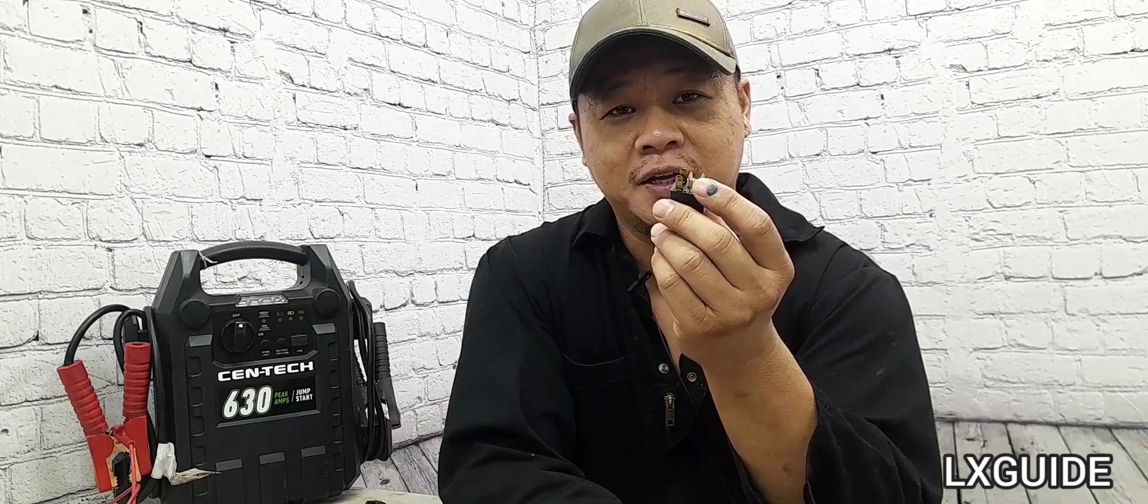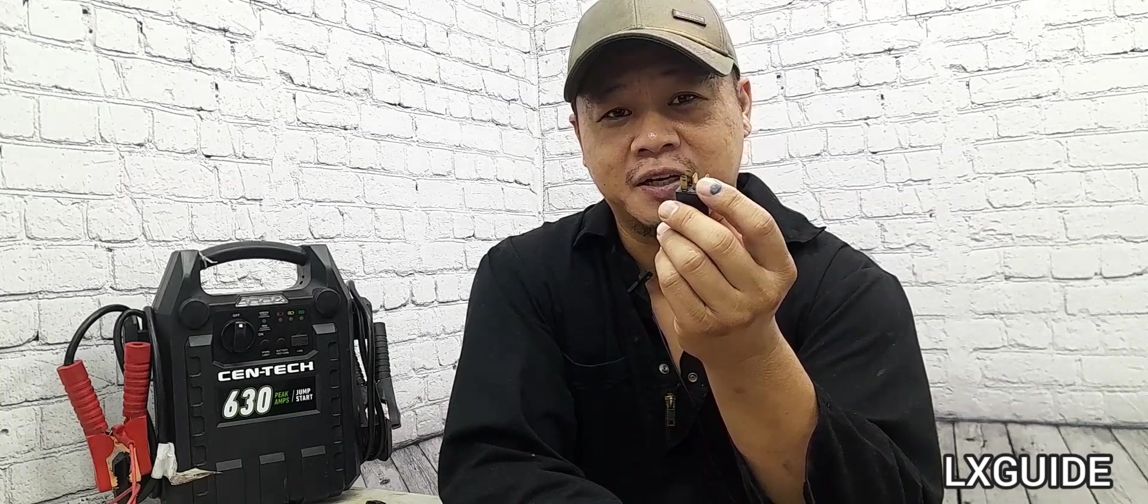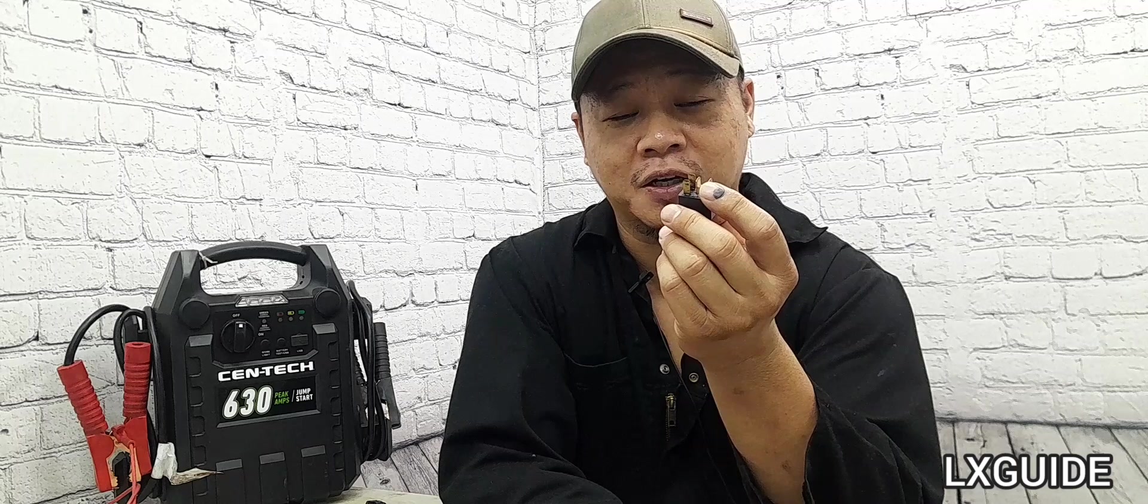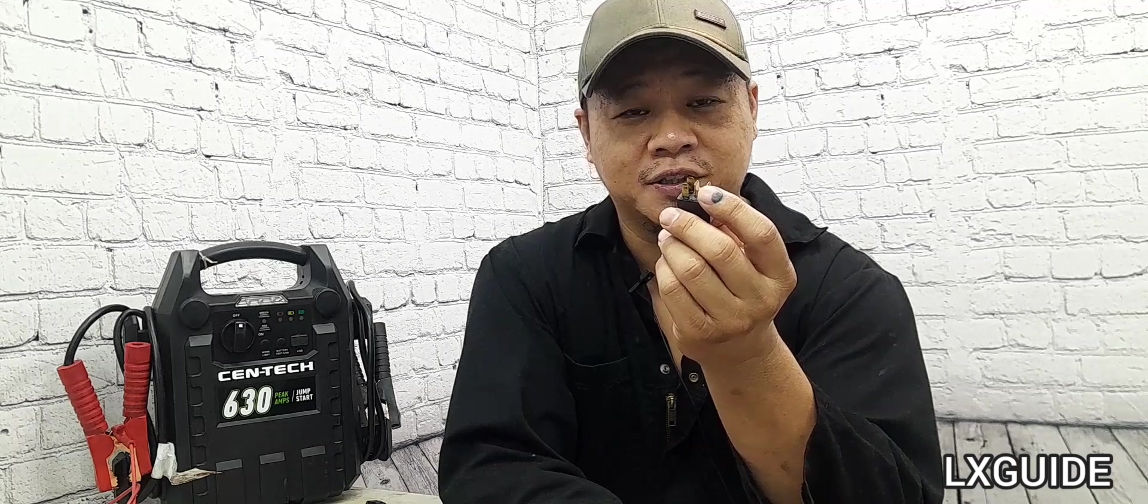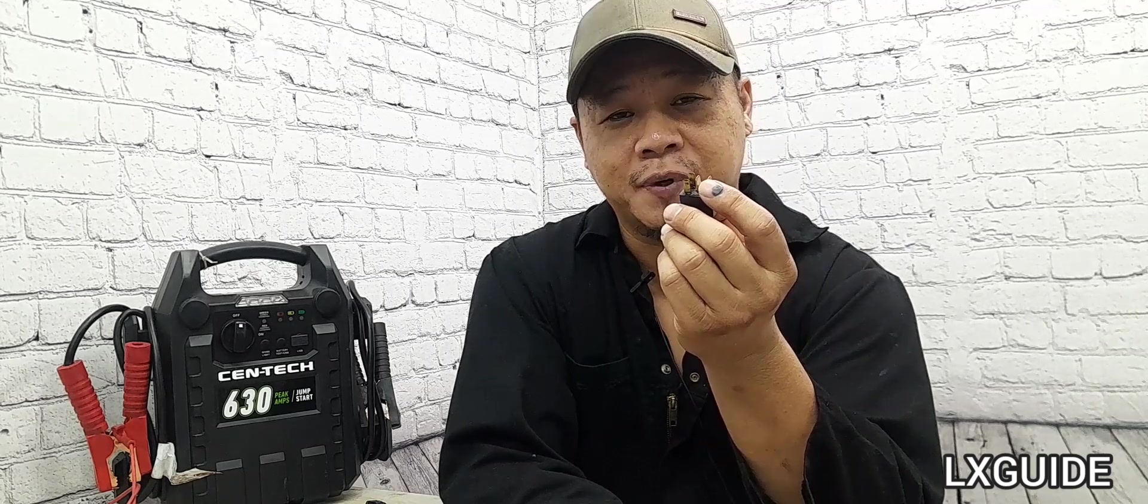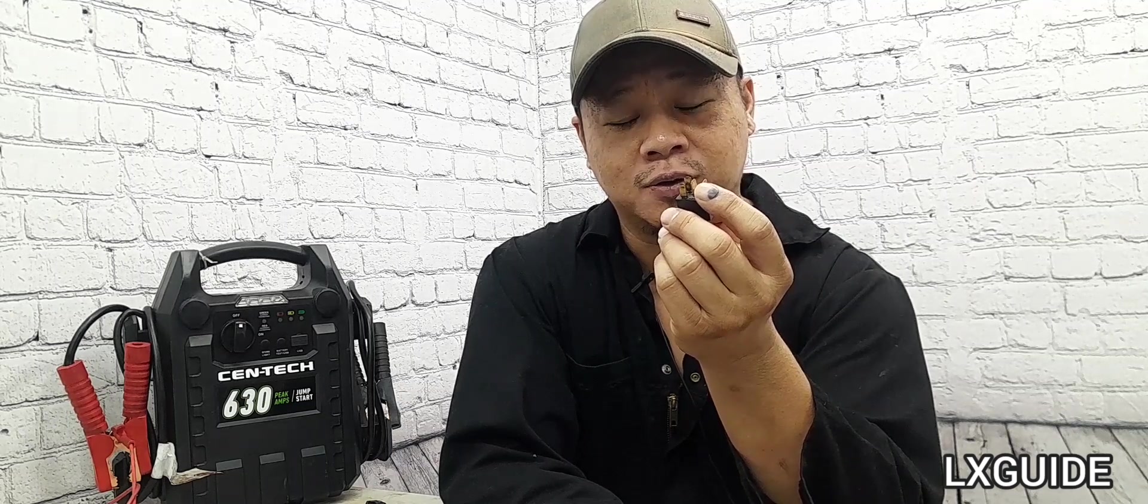On a typical four pin relay you have pin number 86 and 85 which are power and ground and are used to energize the coil. You also have pin number 87 and 30 which allow power to flow to the accessories.